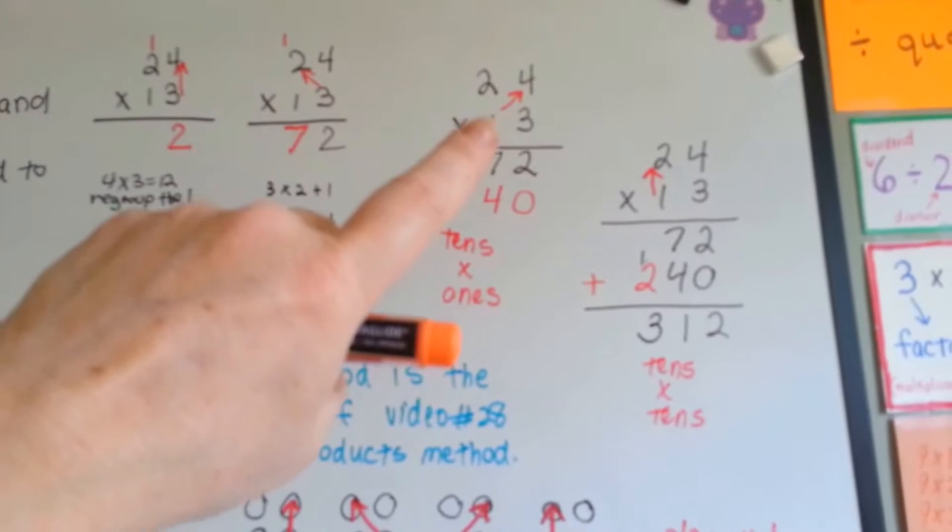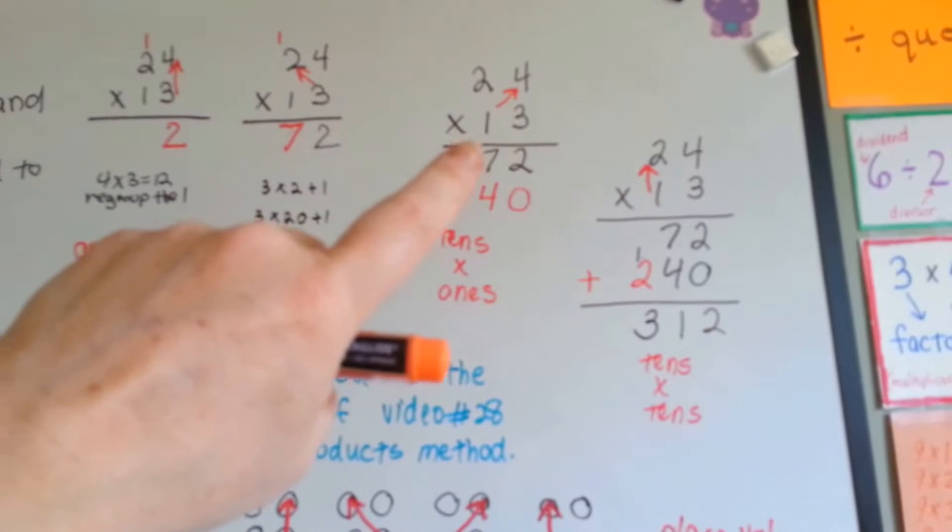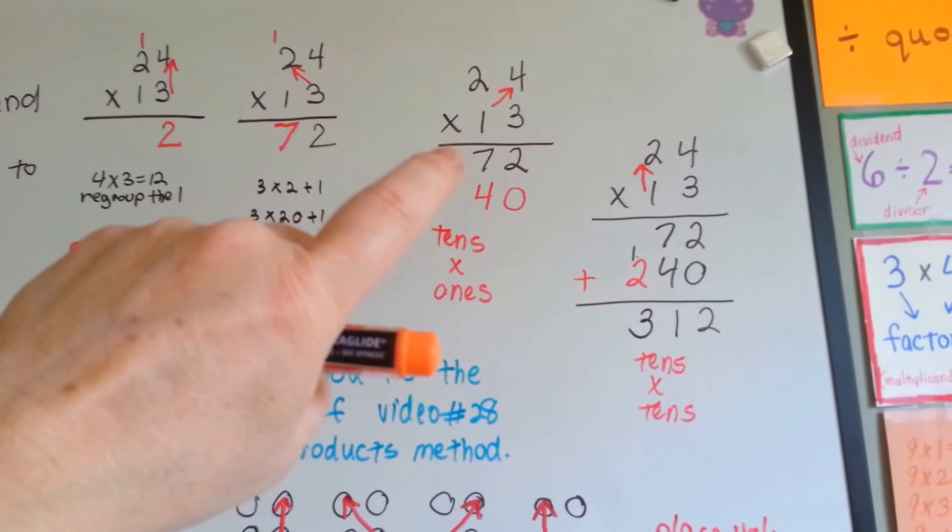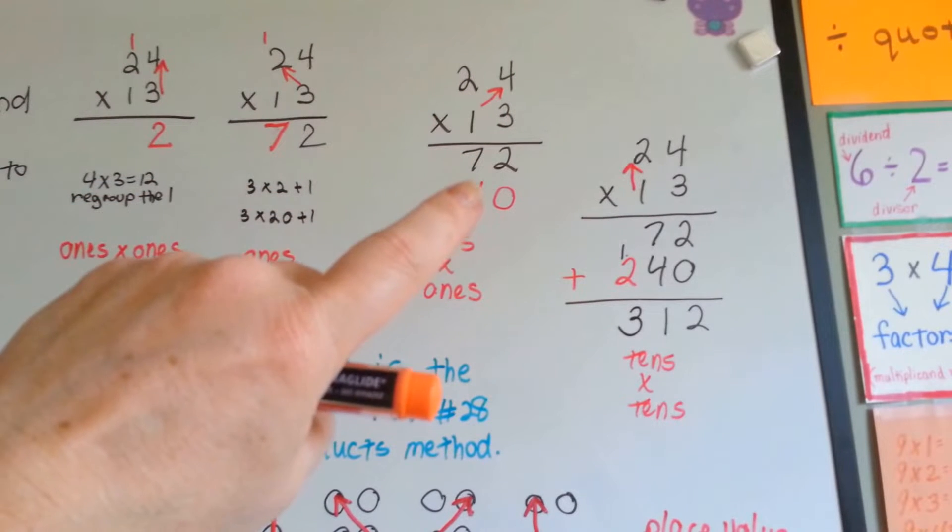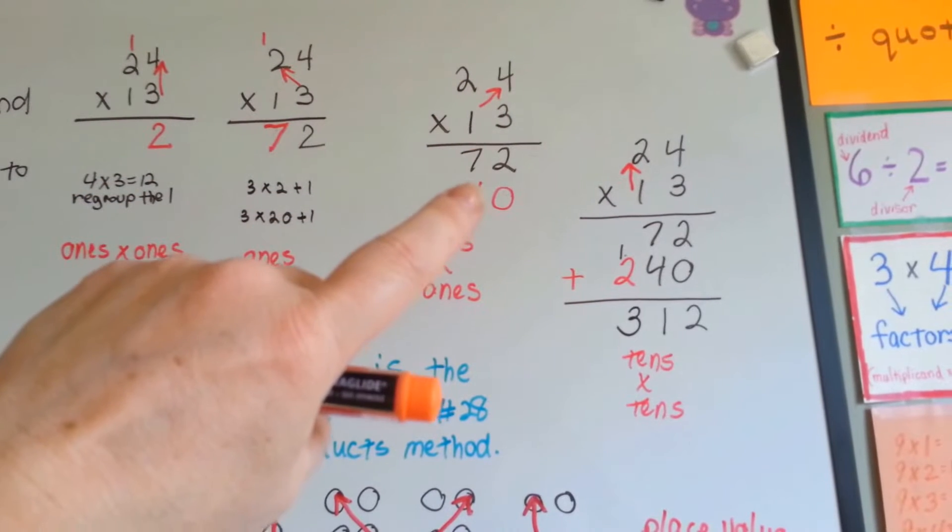So, this 1 is actually a 10, isn't it? Because this is 13. It's a 10 and 3 ones. So we're going to do 10 times 4, which is 40. And the 40 goes down here underneath the 72.